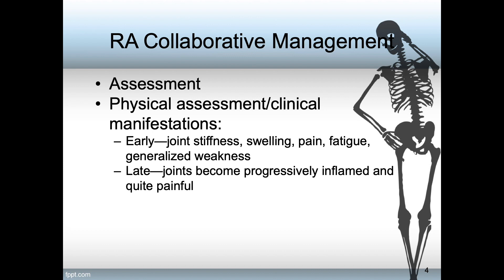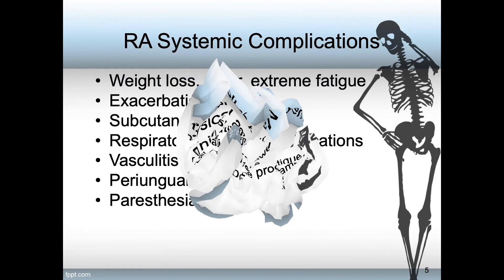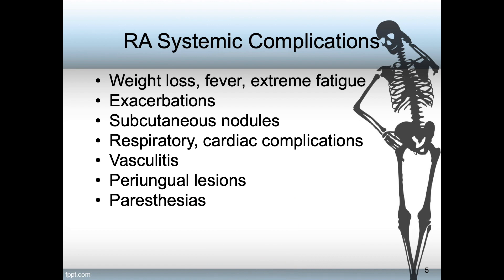Late physical assessments and clinical manifestations include that the joints become progressively inflamed and quite painful. Further, RA can cause the complications of weight loss, fever, and extreme fatigue. Because of its chronic nature, RA has exacerbations and remissions. There can be subcutaneous nodules. Respiratory and cardiac complications are sometimes present, as is vasculitis, and there may be the presence of periungual lesions and even paresthesias.